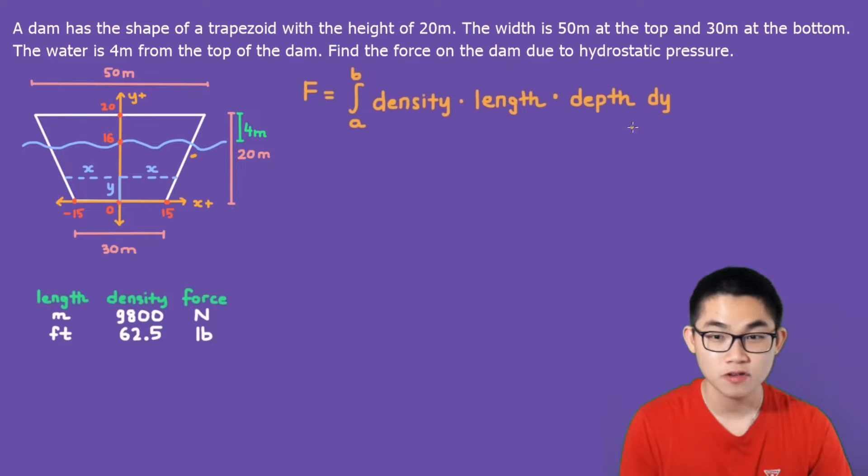And here is the formula to calculate the hydrostatic force and let's solve this formula together. So what is a and what is b? Well, we want to find the hydrostatic force because of the water which is from here to 16, right? So a is 0 and b is 16.